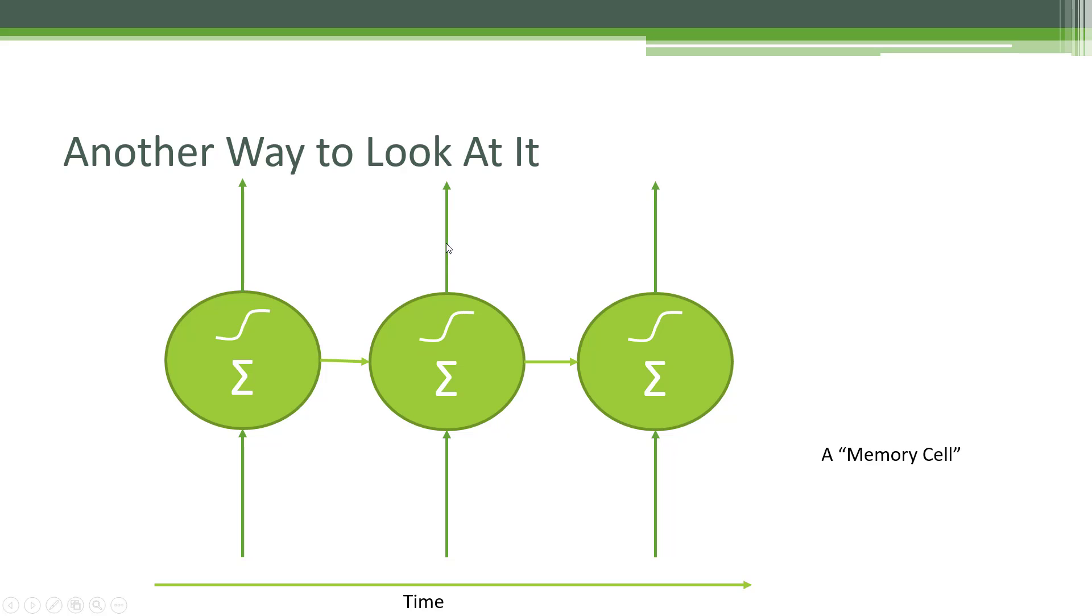And the output of that combination then gets fed onto the next time step, called as time step two, where a new input for time step two gets fed into this neuron, and the output from the previous step also gets fed in, they get summed together, the activation function is run, and we have a new output.